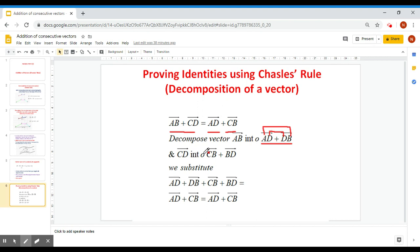And I can decompose CD into CB plus BD. Why CB? Because on the other side, I have CB. And why AD here? Because on the other side, I have AD.